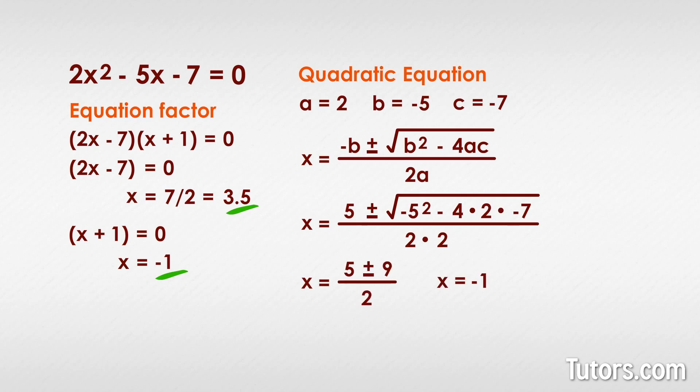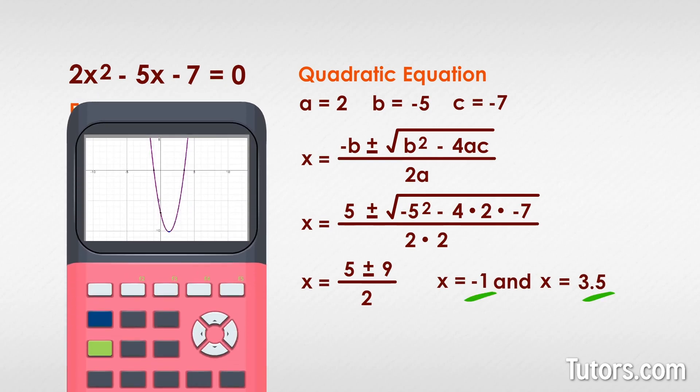x = -1 and x = 3.5. If you then plotted it on a graphing calculator, your parabola would have a vertex of 1.25, -10.125 with x-intercepts of -1 and 3.5.